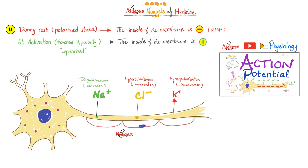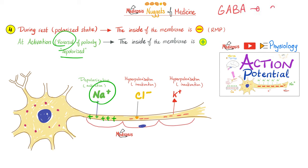In the action potential video from the physiology playlist, nugget number four: during rest, potassium is leaving — potassium is positive, so if the positive charge is leaving, the inside becomes more negative, which is inactivation. During excitation or depolarization, sodium is coming in, making the inside positive — this is activation or action potential. But if chloride comes in, chloride is negative, the inside becomes negative, and this is inactivation. General anesthetics are pro-GABA, and GABA allows chloride influx into the neuron, causing inactivation — that's how they knock you unconscious.